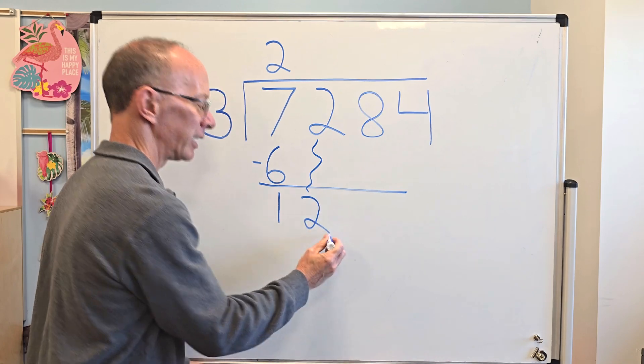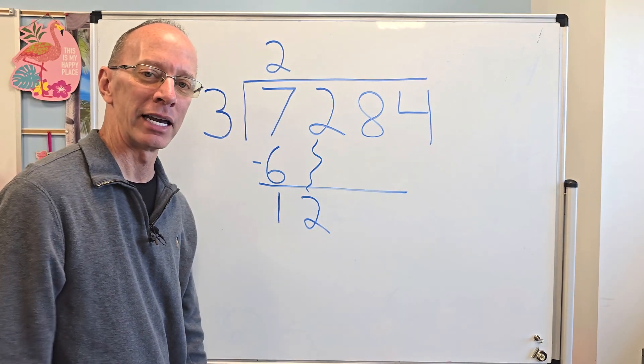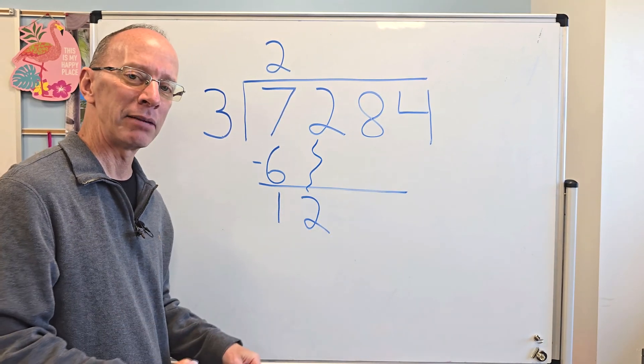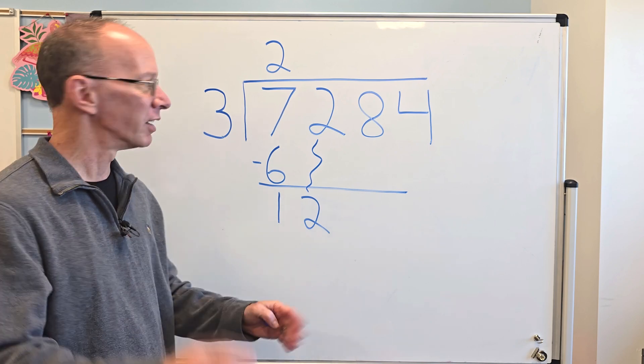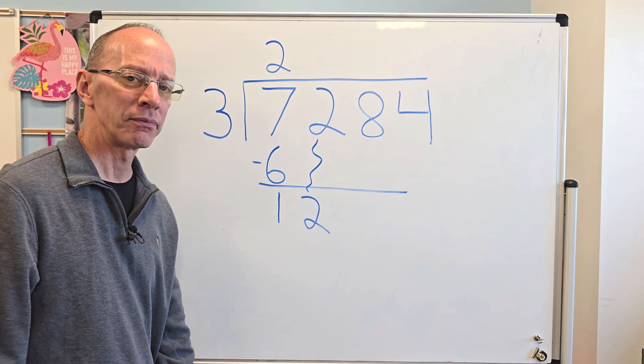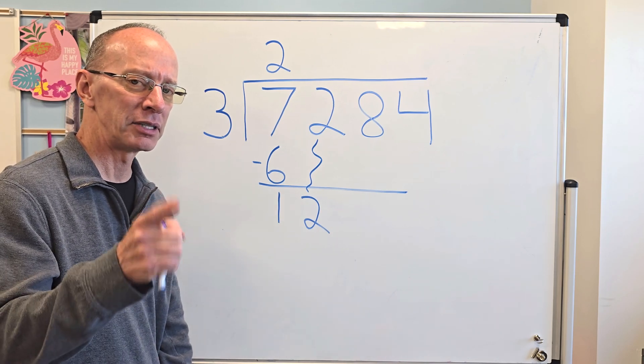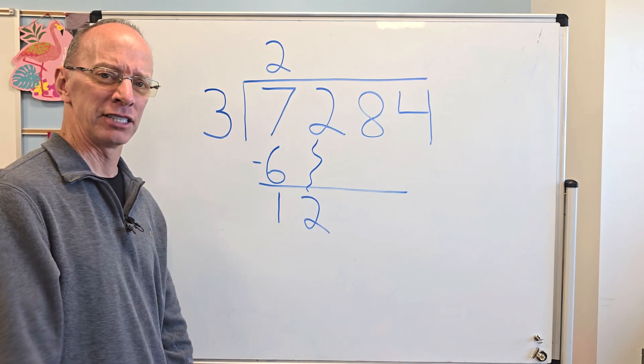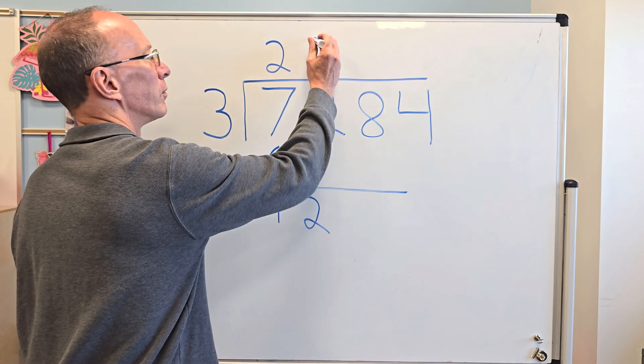Put the 2 right there. You've got to have fun in mathematics. Make it fun. Make it a game. Make it a puzzle. Just have fun. So now, how many times can I put 3 into 12? 3 times 3 is 9. 3 times 4, bingo! It is 12. So I put 4 right here.